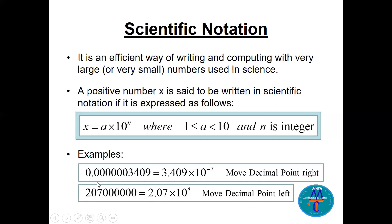Let's look at two simple examples. The first one: 0.00000003409 — it looks ugly to read like this, that's why we need scientific notation. We can write it as 3.409 times 10 to the power minus 7. We move the decimal point to the right: one, two, three, four, five, six, seven — and I stop here.